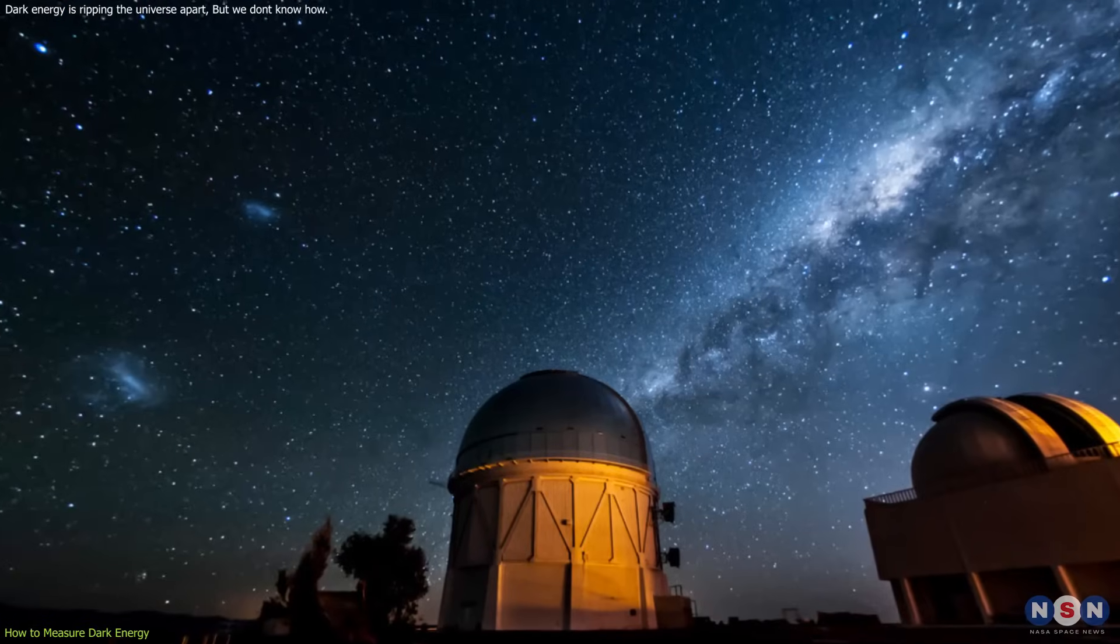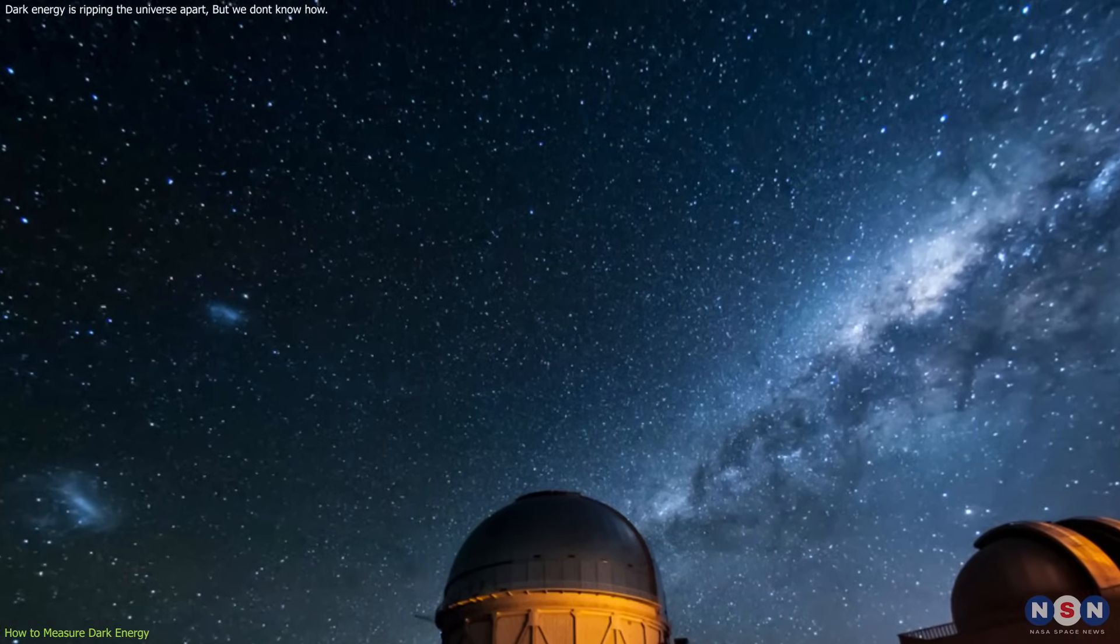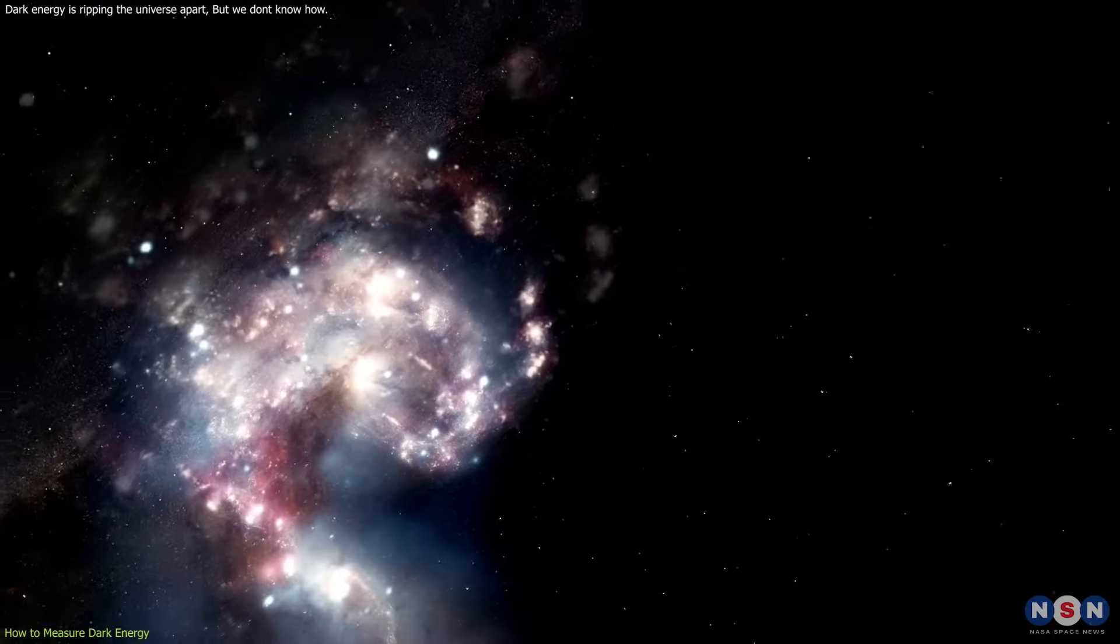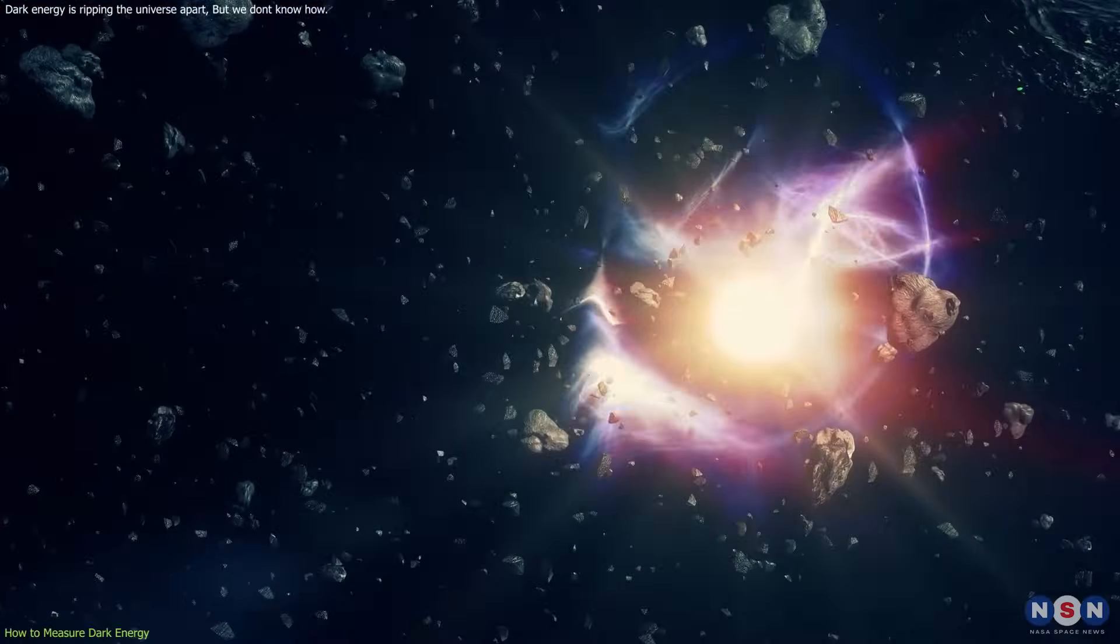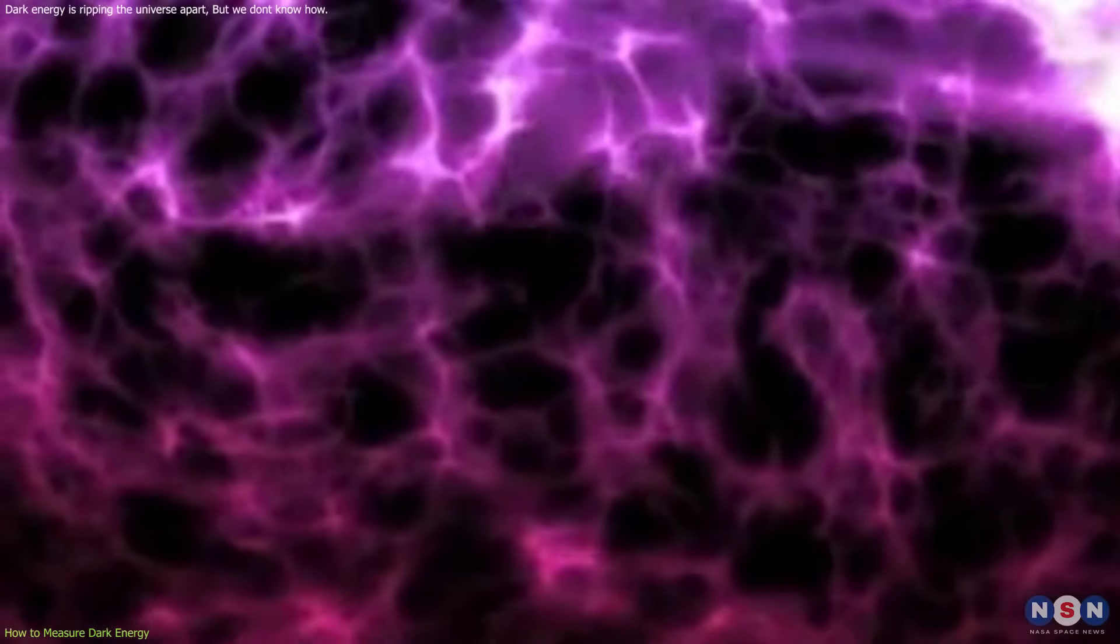The DES used multiple techniques to measure the properties of dark energy, such as galaxy clustering, weak gravitational lensing, and supernovae. Let's see what each of these techniques means, and how they relate to dark energy.